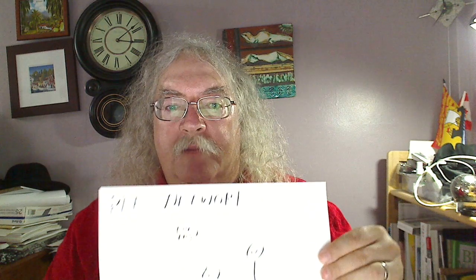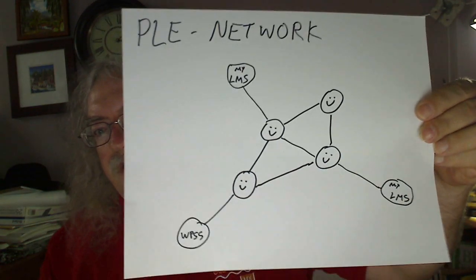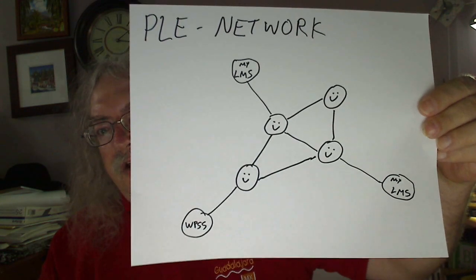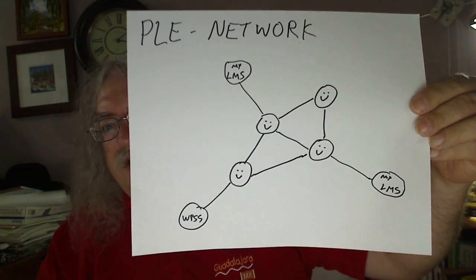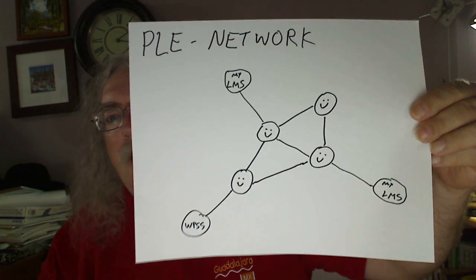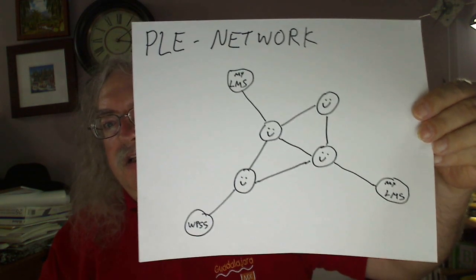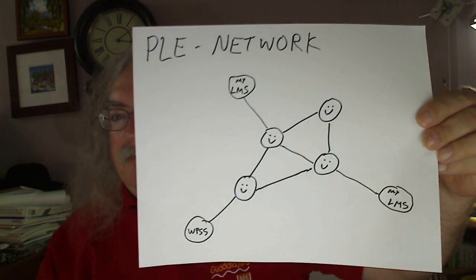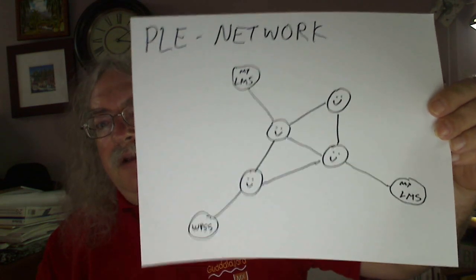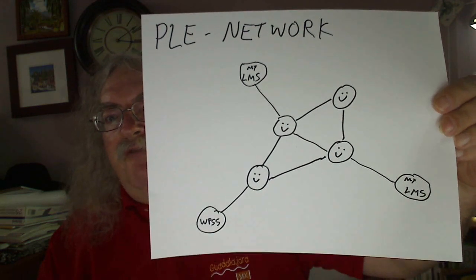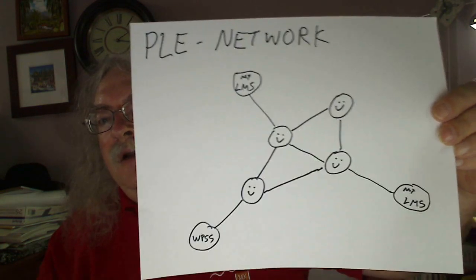Here's how personal learning environments look at networks. Instead of connecting LMSs with each other, we connect individuals with each other. Each individual is directly connected with the other — they can connect by sending messages, sharing resources, or however they want. They can access any third-party system to form this connection, including an LMS, but they're not required to join an LMS. As you can see from this diagram, three of the people here are connected to different LMSs, and a fourth isn't connected to any LMS at all. Nobody is locked out of the network when you're using personal learning environments.